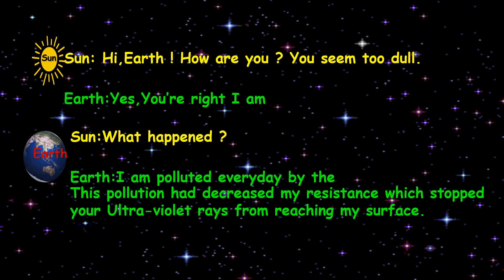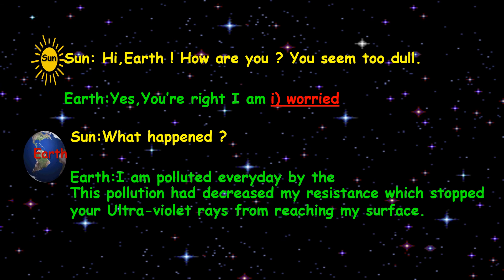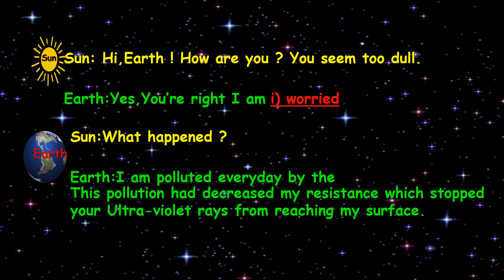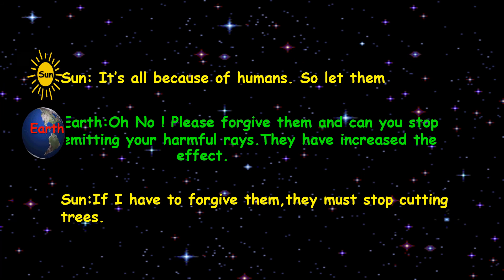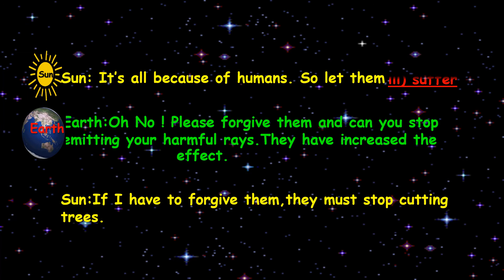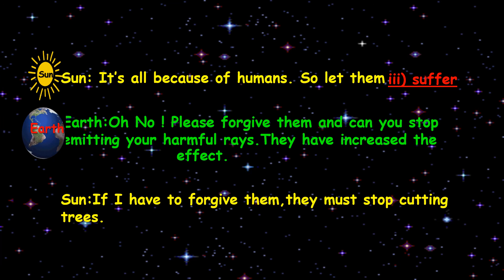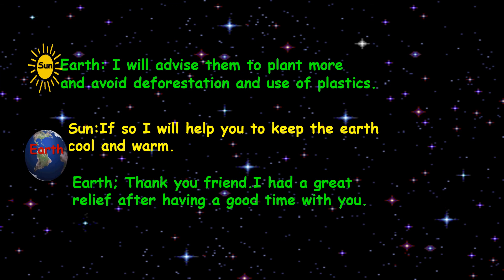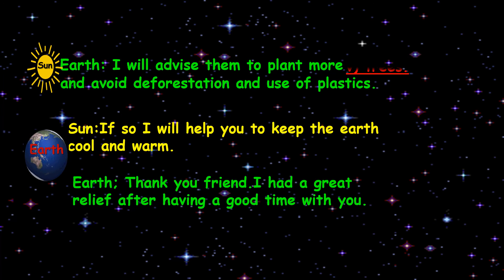In the first dash, we have to write 'worried.' In the second dash, we have to write 'humans.' In the third dash, we have to write 'suffer.' In the fourth dash, we have to write 'greenhouse.' In the fifth dash, we have to write 'trees.'